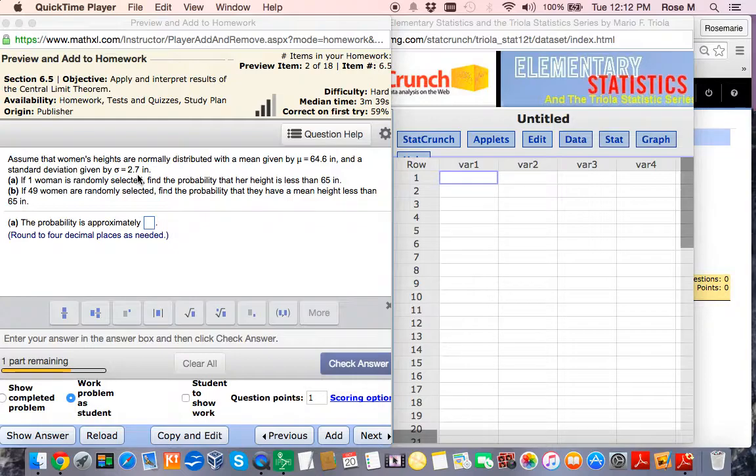In part A, it asks if one woman is randomly selected, find the probability that her height is less than 65 inches. Now I'd like to show you how to do this using StatCrunch.